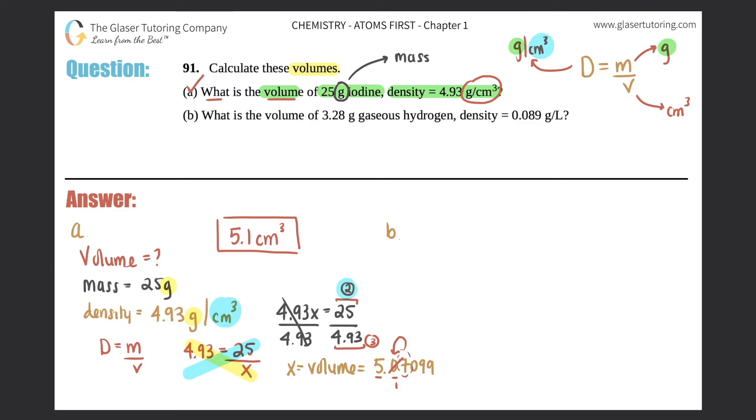Now let's go to b. What is the volume of 3.28 grams of gaseous hydrogen, density equals 0.089 grams per liter? Let's write it down. They gave us a g, I know that's a mass, so mass equals 3.28 grams. They gave us a density, so density equals 0.089 grams per liter. And they're looking for the volume, volume equals question mark. Straight formula again, D equals m over V. Just make sure that your units match, and they gave me grams for my mass and grams as the mass unit for density, so we're good to go.